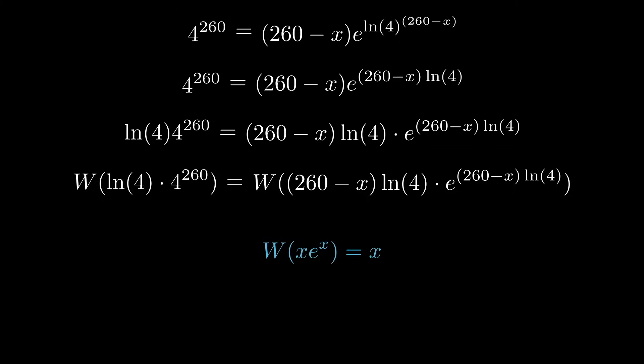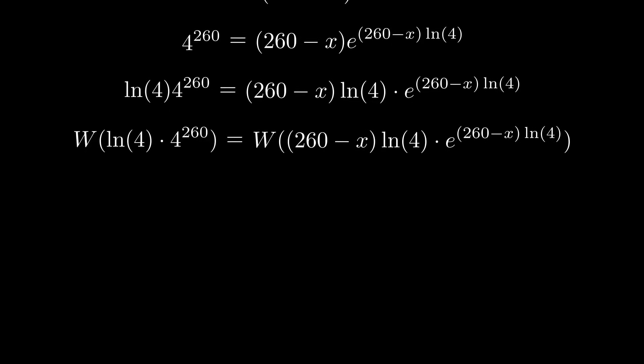Although it's not just x in this case. It's 260 minus x times natural log 4. Meaning that when we apply W to both sides of this equation, everything on the right reduces to just that repetition. Just that 260 minus x times natural log 4.